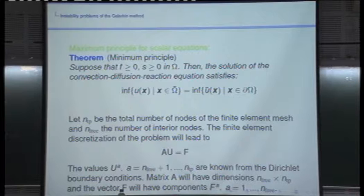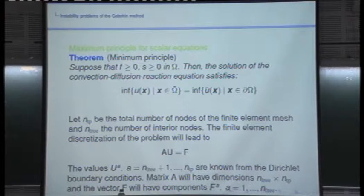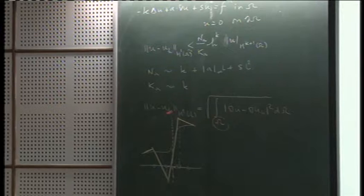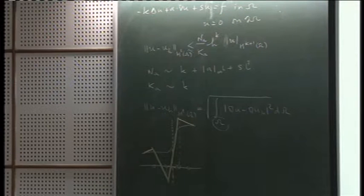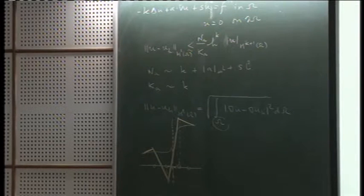Regarding the H1 norm: I wrote it as essentially the square root of the integral of the gradient of u minus grad u_h. The L2 norm is missing, but you can control it by the gradient norm because of the Poincaré inequality. In the case where the boundary condition is zero, you can take the gradient norm as a definition of the H1 norm — it's the same up to constants.